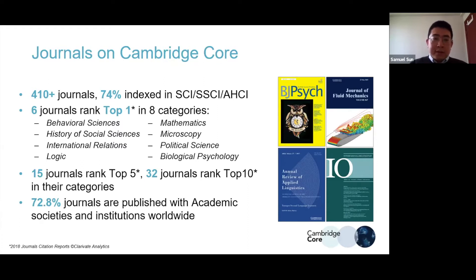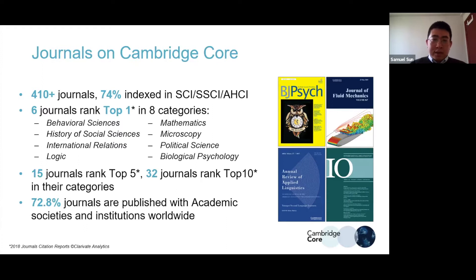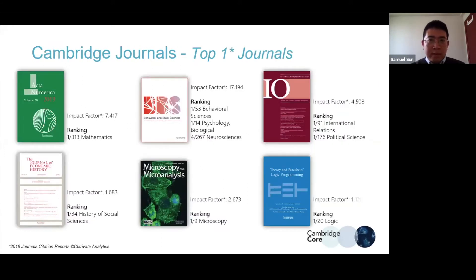Over 70% of our journals are published in collaboration with academic societies and institutions. This ensures global collaboration with universities, institutions, and authors, and also ensures the high quality of our journals. Here are the six top-ranked journals, which I will introduce in the following sections.